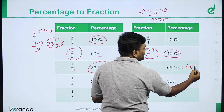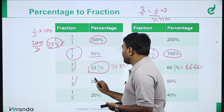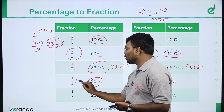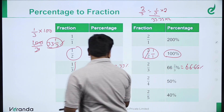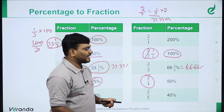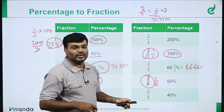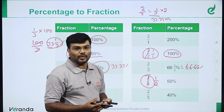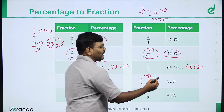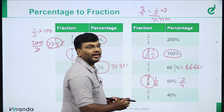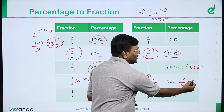1 by 4 is 25%. 1 by 4 into 100 gives 25%. For 2 by 4, that simplifies to 1 by 2, which is 50%. For 3 by 4, since 1 by 4 is 25%, three times that gives 75%.